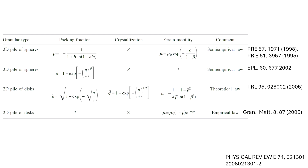For 3D piles of spheres, this gives semi-empirical laws - I think a logarithmic law. For 2D piles of disks it's more exponential. This exponential character comes from crystallization, because in 3D systems you don't get crystallization easily, but in 2D you can check it out. You get mobility behavior and associated functions, and the 2D system also shows a little bit of crystallization.